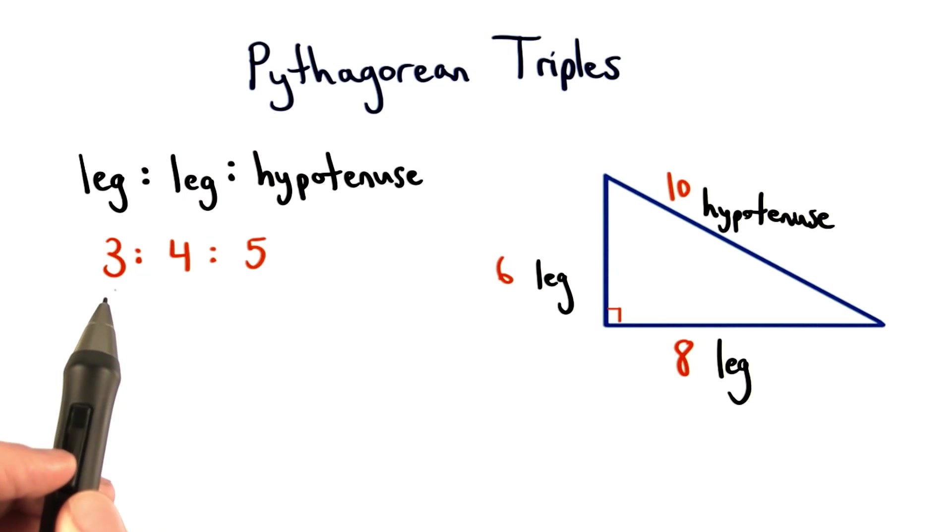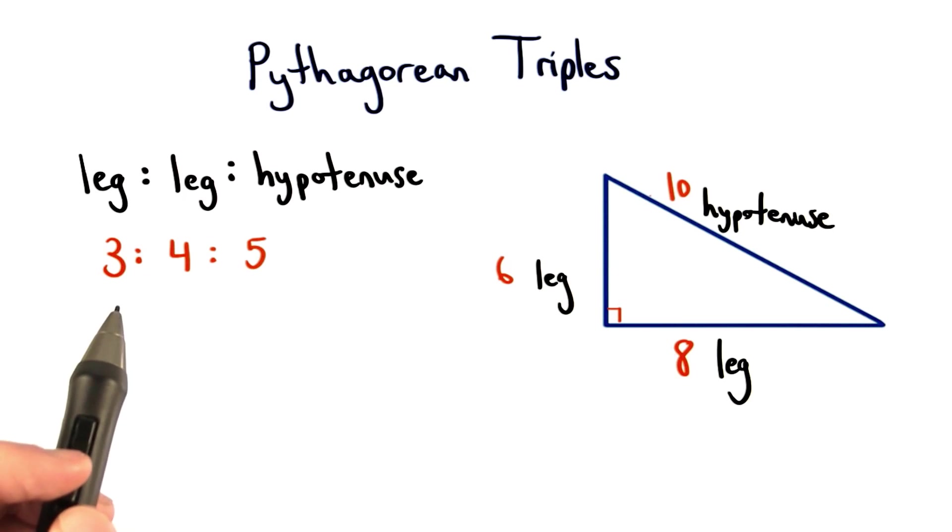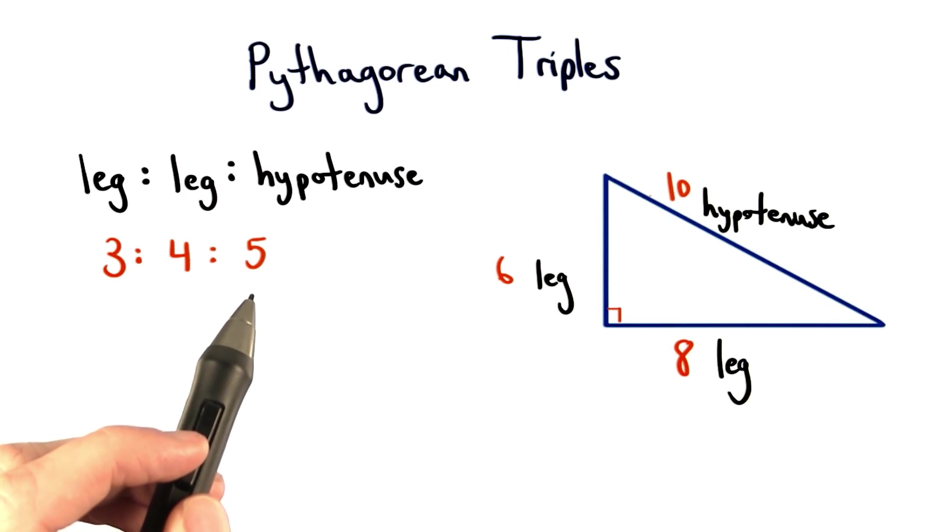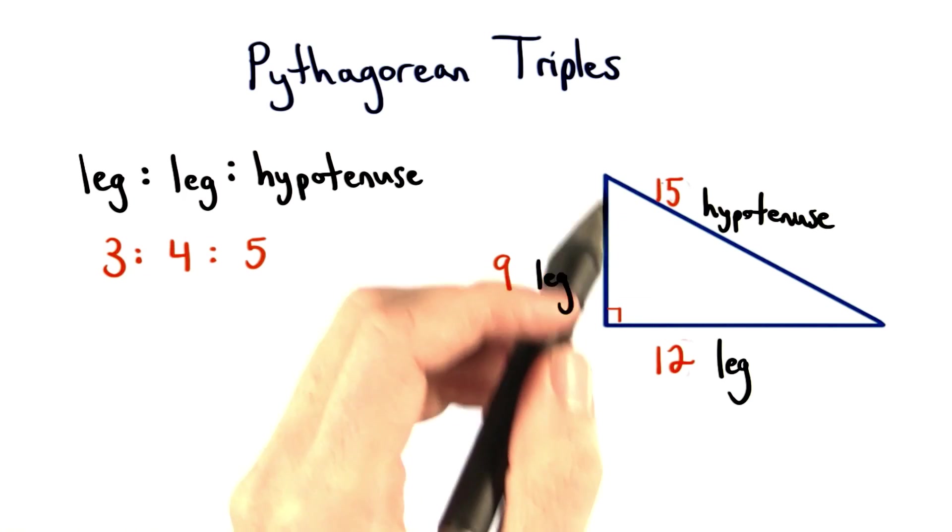So multiplying through by any number for this ratio would give us a right triangle. We could multiply through by 3 to get a different right triangle. And in fact, that triangle would be a 9, 12, 15 right triangle.